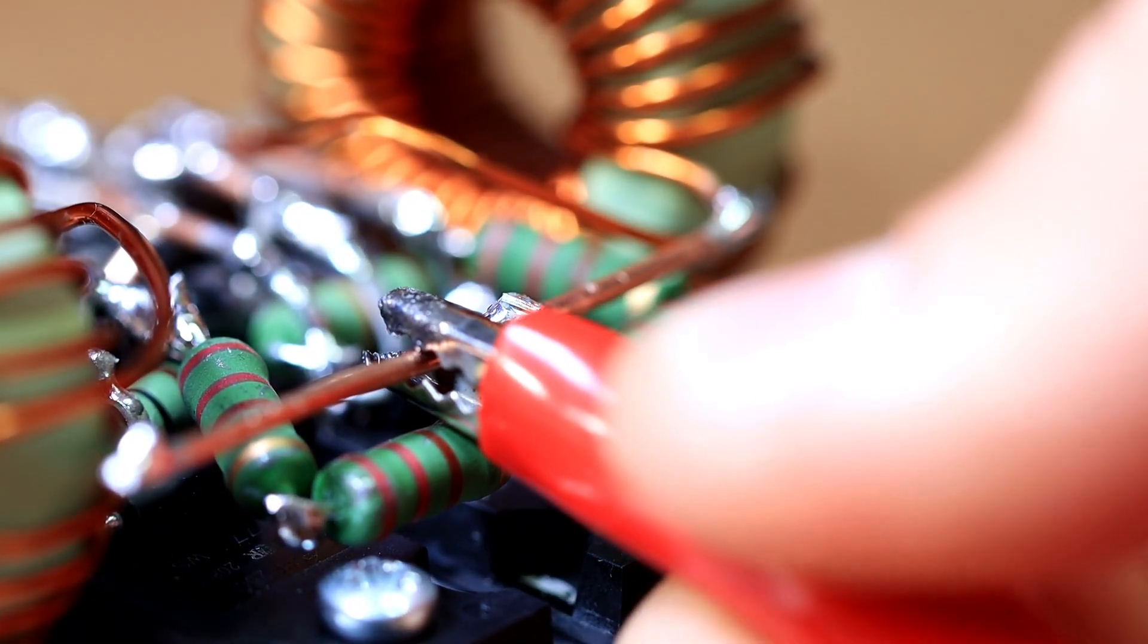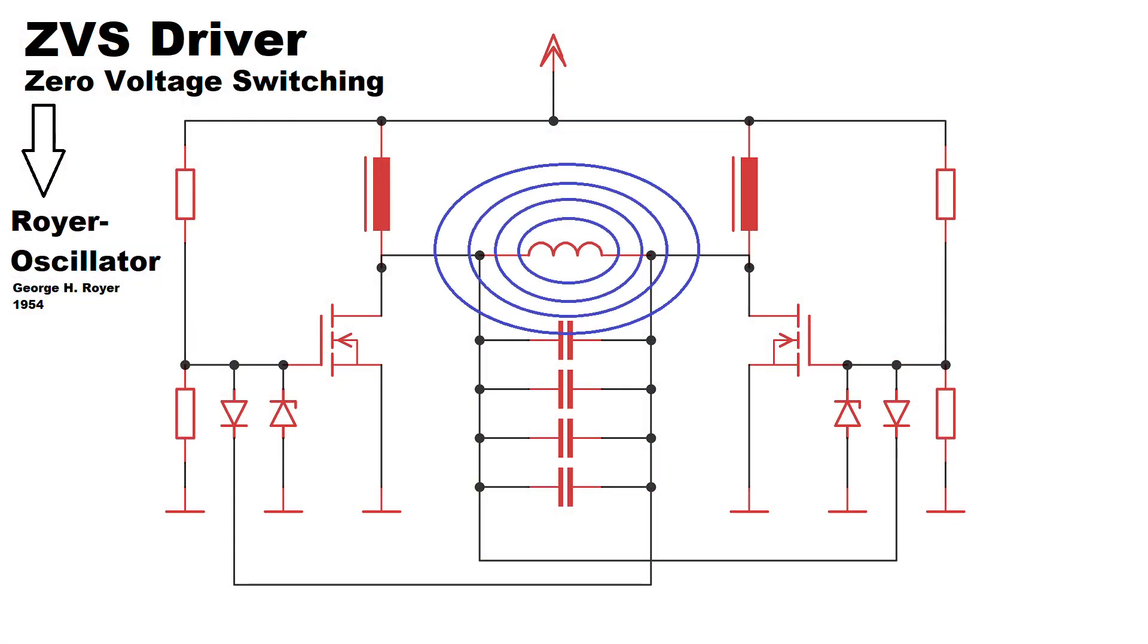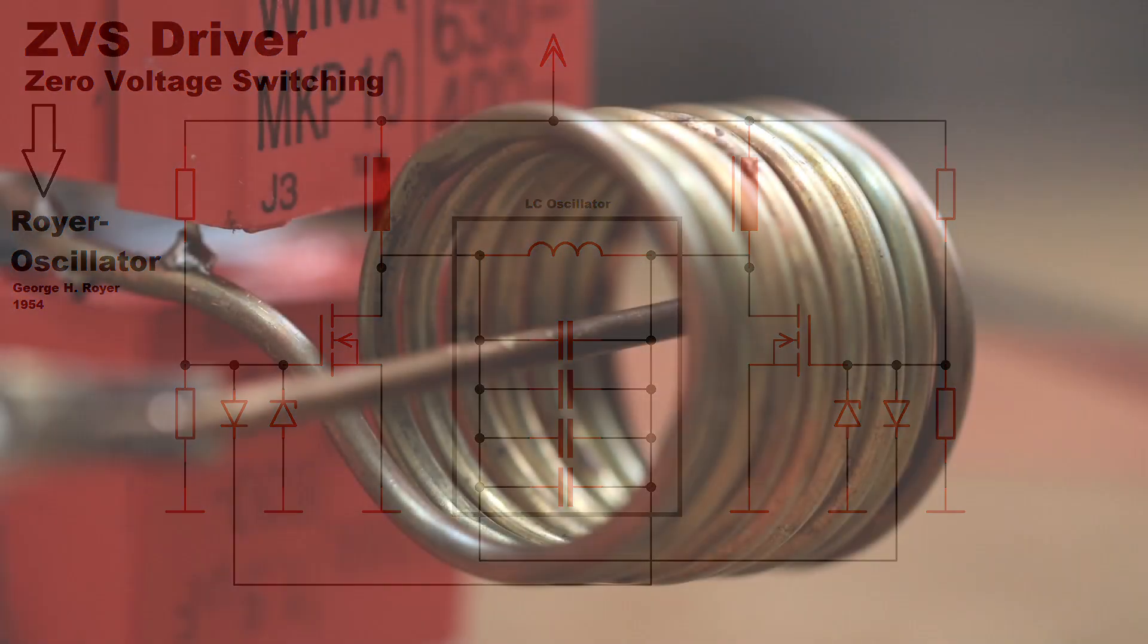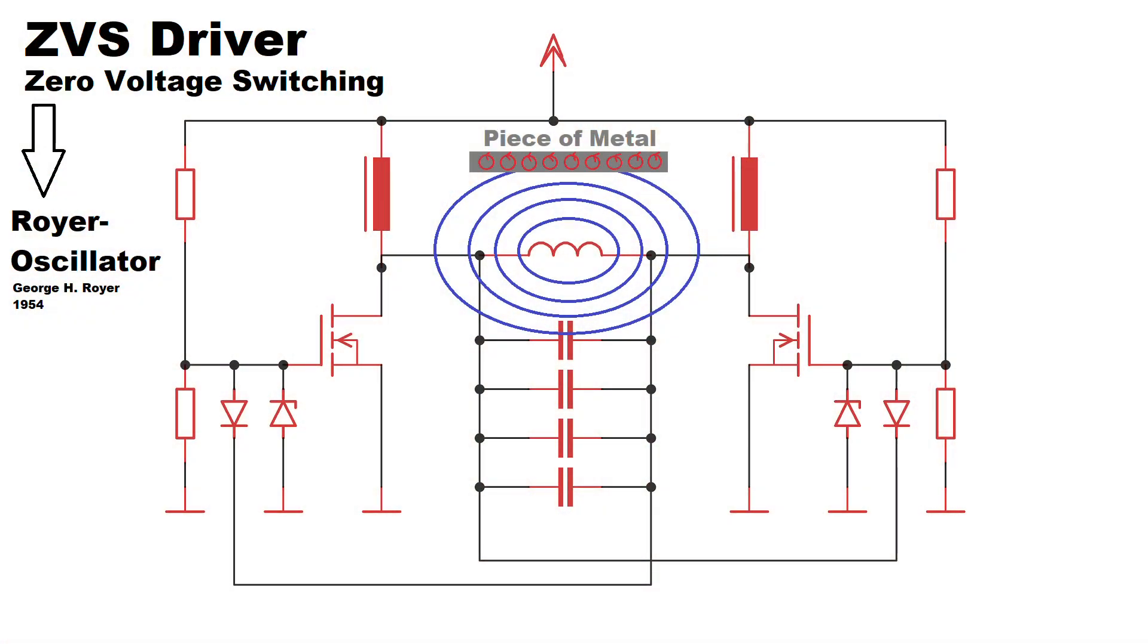We could also replace the coil with a pancake coil which would be more like in the kitchen. If I now supply power to the circuit the oscillator starts to oscillate. The coil then emits a strongly changing magnetic field in the frequency given by the oscillator. If we now hold a metallic object in the center of the coil following happens.